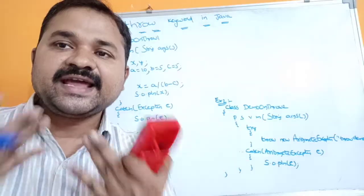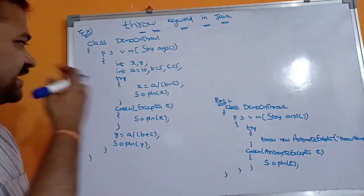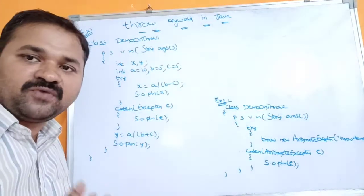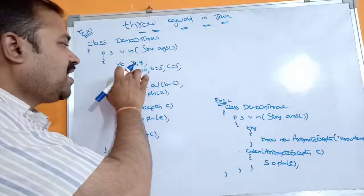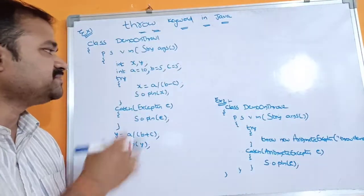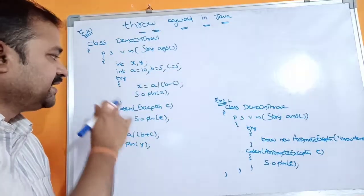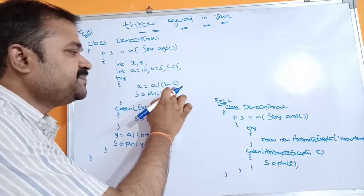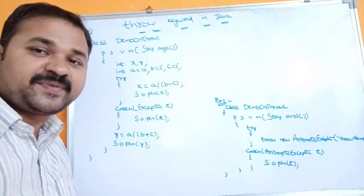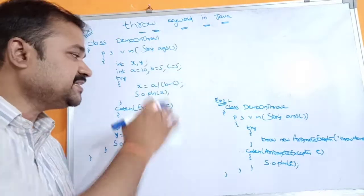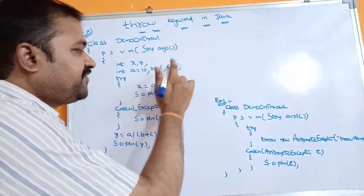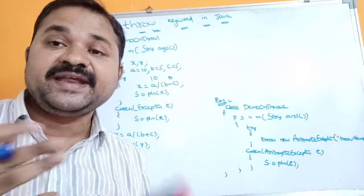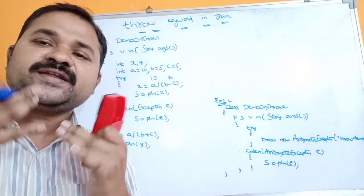The first example demonstrates implicit throw. The class name is DemoOnThrow1. Execution starts from the main method. We have variables a=10, b=5, c=5. In the try block we have the statement x = a / (b - c). Since parentheses have higher precedence than division, the denominator b minus c is evaluated first: 5 minus 5 equals 0. So a/0 means 10 divided by 0, which causes an ArithmeticException.